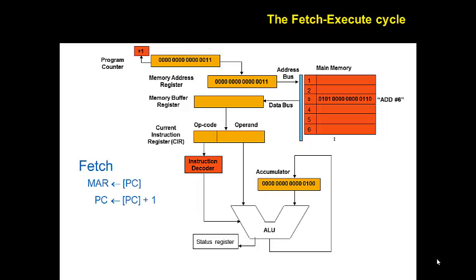The main memory will be read. The program counter could also be incremented to point to the next instruction to be fetched, and this could also happen during the read operation. The contents of the main memory are sent to the CPU on the data bus and are received in the memory buffer register. In this example, the machine code represents an add 6 instruction, which is going to add the contents of the accumulator with the value 6.